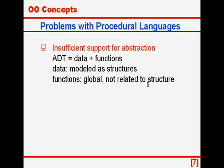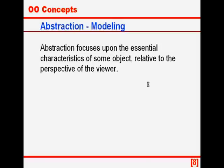Another big problem with procedural languages is insufficient support for abstraction. An abstract data type has two parts: one is the definition of the data, and the second is the definition of the operations or functions which can be applied on the data. In a language like C, data can be modeled as structures but the functions are global and not related to the structure. Now let us see what abstraction is.